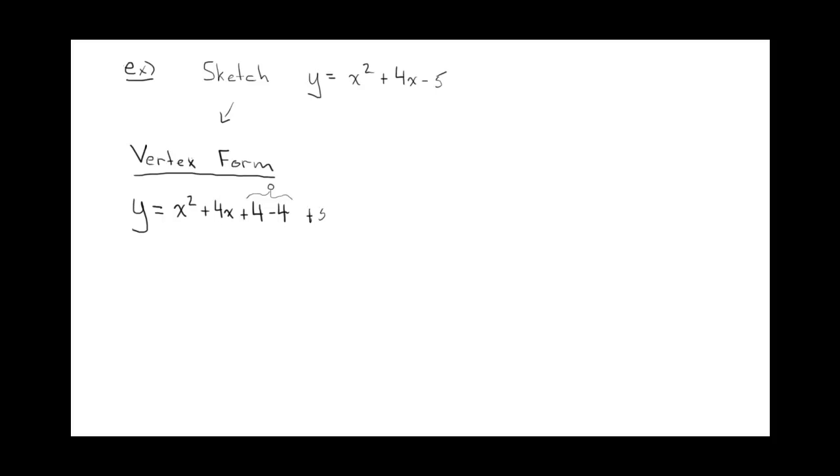Remembering that that is 0. And then leave the plus 5. Sorry, it was minus 5. So all you're doing is inserting these two terms which are effectively 0. You group the first 3. Factor it as a perfect square. X plus 2 all squared, minus 4 minus 5.